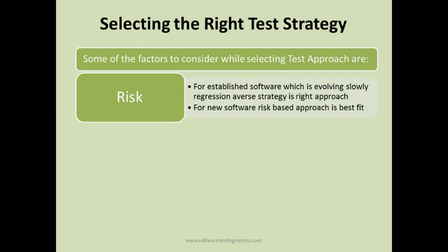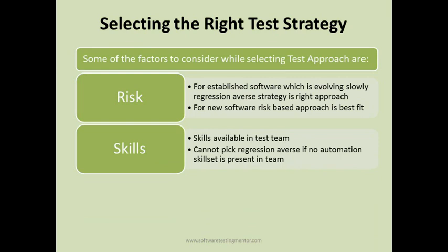The second factor is skills. What skills are available in the team? Do you have automation skills in the team, or will you need to hire someone with automation skill sets to follow a regression averse strategy? If you want to adopt regression averse strategy, you need that skill set in your team. If you do not have it, you cannot proceed with just manual testing resources — either you build automation skills through training or you hire someone who can perform automation tasks.